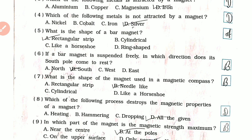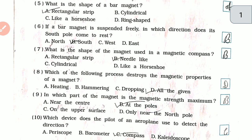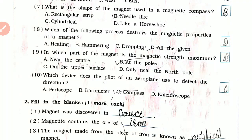What is the shape of a bar magnet? Rectangular strip. If a bar magnet is suspended freely, in which direction does its south pole come to rest? South. What is the shape of the magnet used in a magnetic compass? Which of the following processes destroys the magnetic properties of a magnet? All the given.